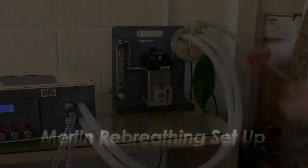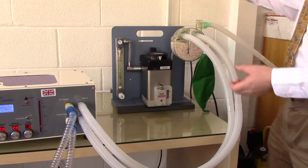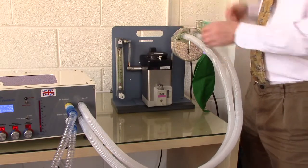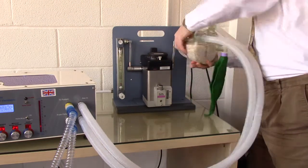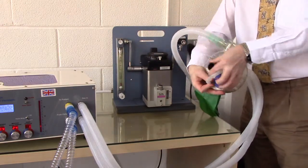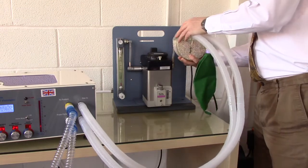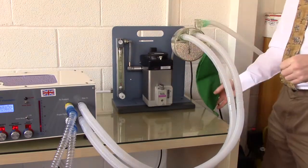This video illustrates Merlin's setup in a rebreathing or circle configuration. What we have here is a fairly typical circle system, which is fed by a single flow from the fresh gas outlet into the back of the circle from the 22mm FGF outlet.